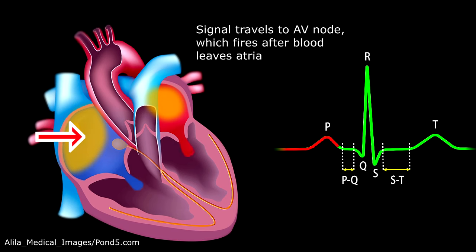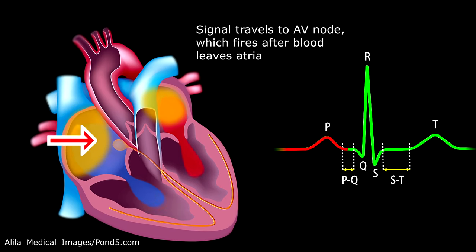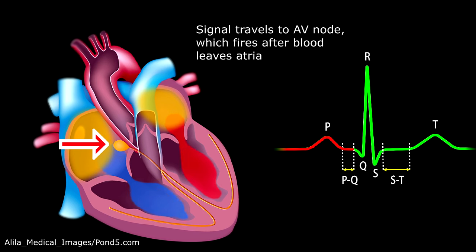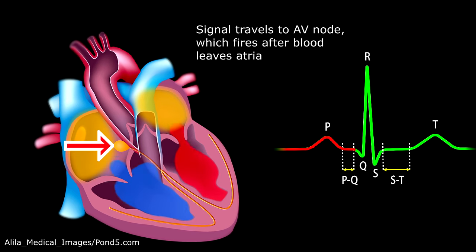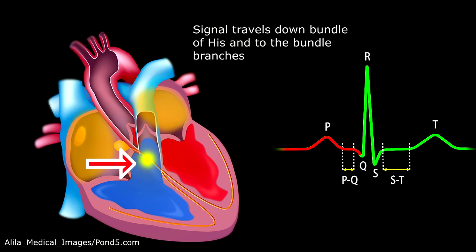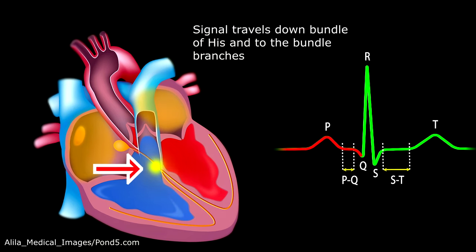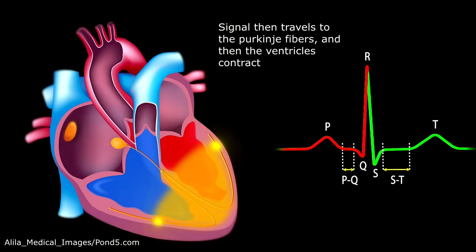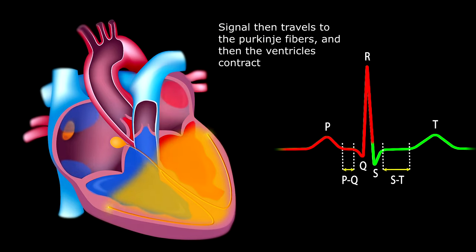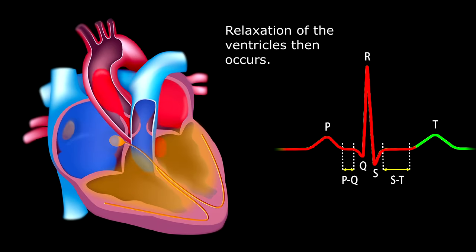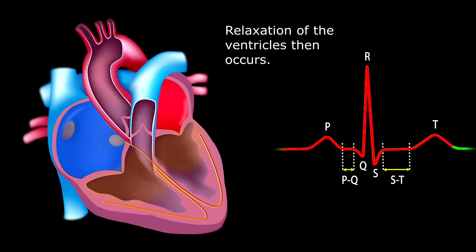Notice the AV node does not fire until those atria are empty and the blood is in the ventricle. Then it's time for ventricular depolarization. The signal travels down through the bundle of His to the bundle branches, and then the Purkinje fibers, causing ventricular contraction followed by the relaxation of the ventricles.